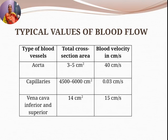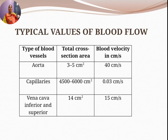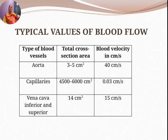In the vena cava — both inferior and superior — which carries blood from the body parts toward the lungs, the cross-sectional area is 14 cm² and the velocity of blood is 15 cm/s. So based on the type of blood vessel, the flow rate of blood varies.